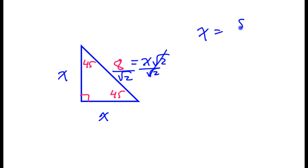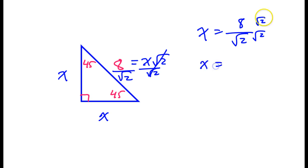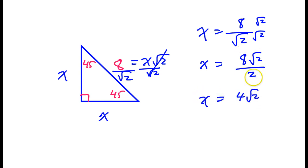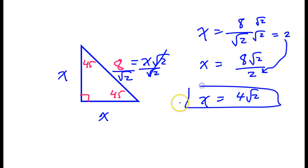That leaves you with x is equal to 8 over radical 2. Then we would rationalize the denominator by multiplying the numerator and denominator by radical 2. That will give us 8 radical 2 over 2. And 8 divided by 2 is 4, so that's 4 radical 2. Radical 2 times radical 2 is 2. So that would tell us that both of these were 4 radical 2.